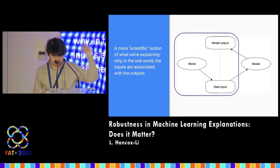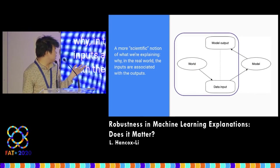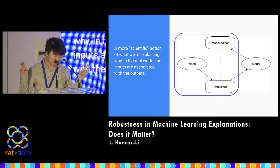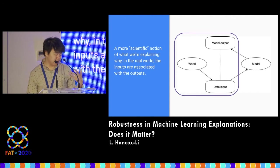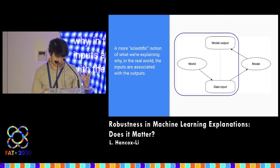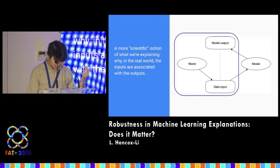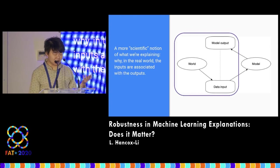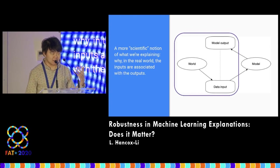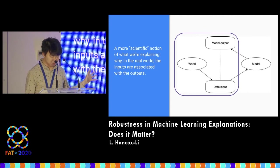There are some applications in machine learning that are more scientific, where we are actually concerned about explaining relationships in the real world. In these cases, I would argue that what we're explaining includes relationships in the world, not just what's in the data and the output. For example, if you have a model that predicts the risk of stroke given a patient's characteristics, you want it to have some grounding in real-world relationships — so part of what you're explaining is those real-world relationships.